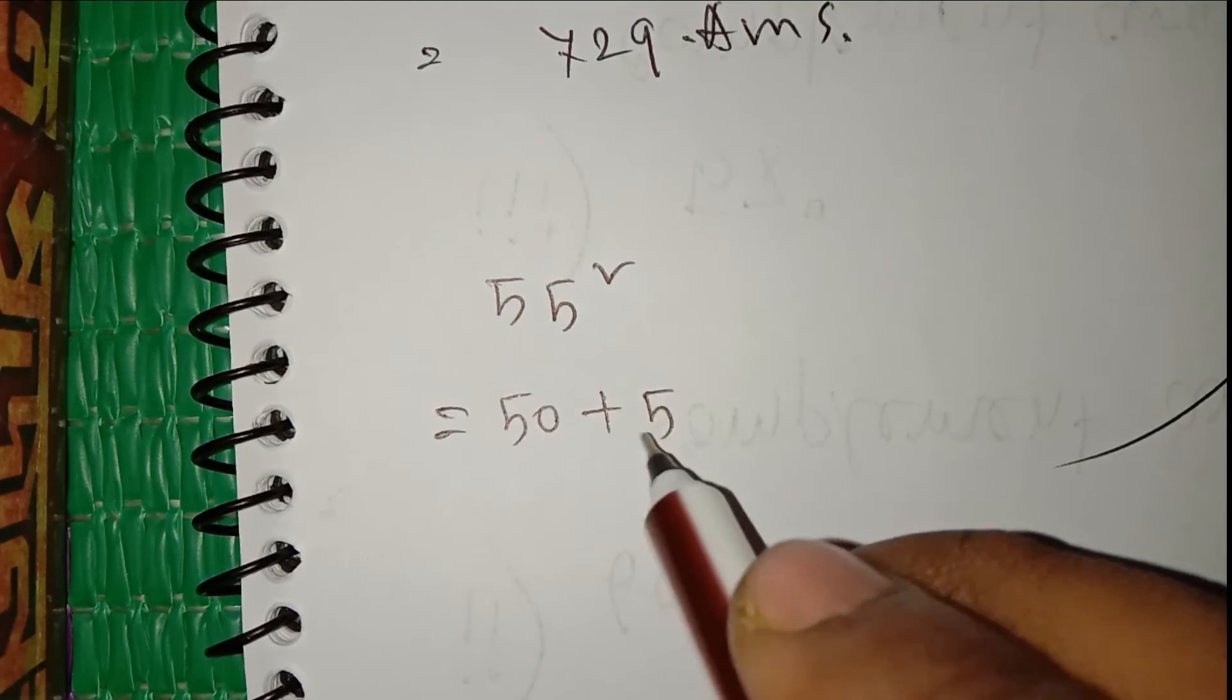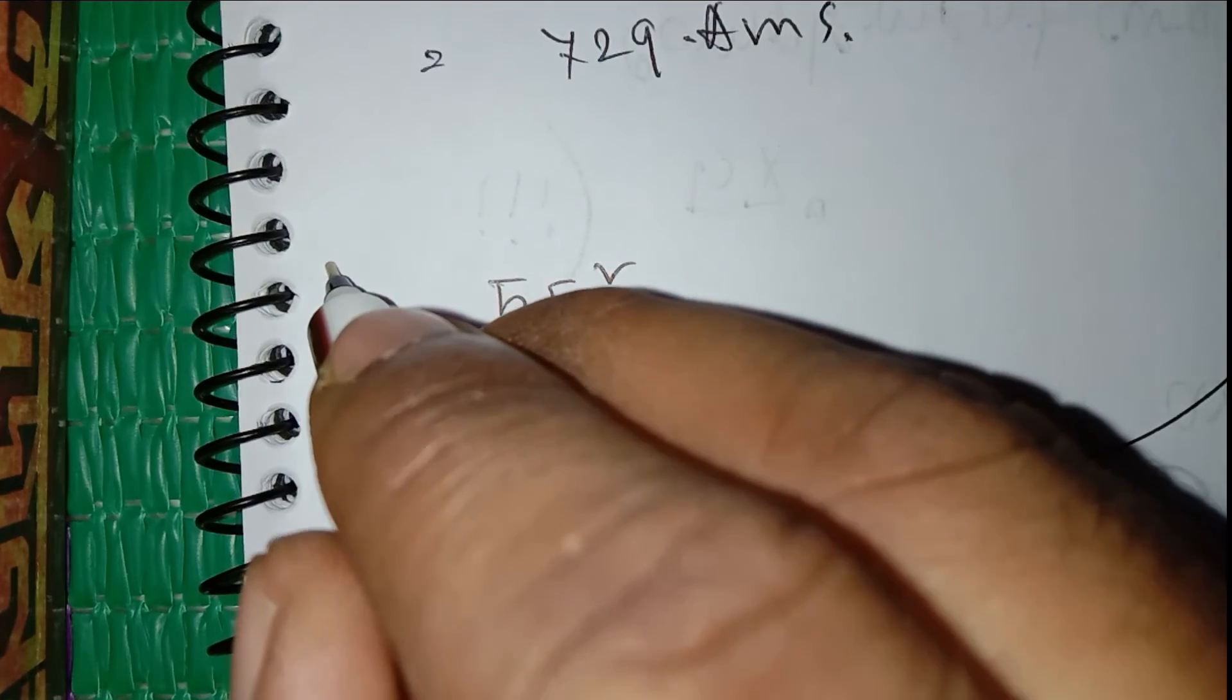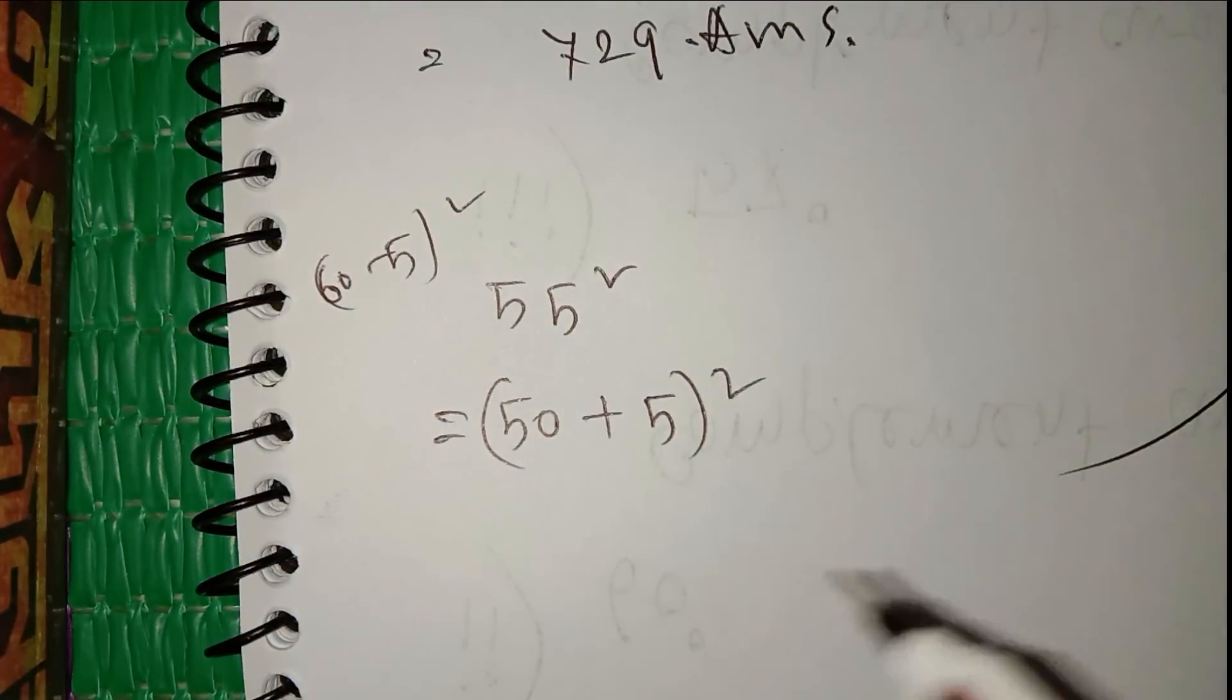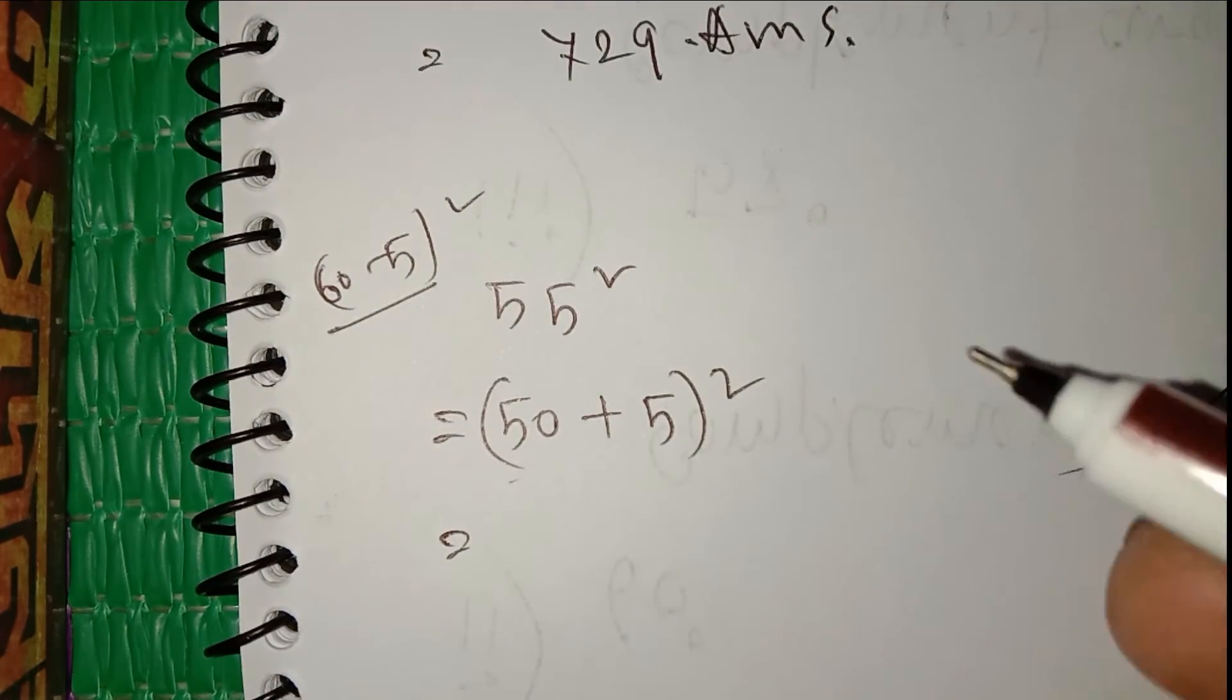Two ways you can write: 60 minus 5 whole square, which will be the same. Here it will be a minus b whole square, and this will be a plus b whole square.